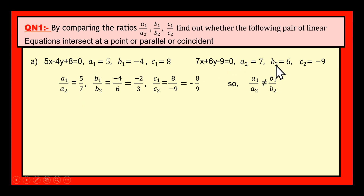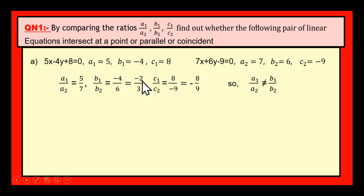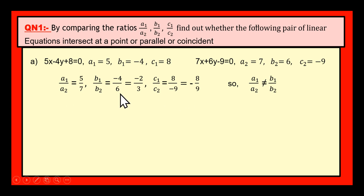Next, B1 by B2 — it is the ratio of the y coefficients. B1 value is minus 4, B2 value is 6. You can cancel 2 in 4 two times and in 6 three times, therefore minus 4 by 6 is equal to minus 2 by 3. And C1 by C2: C1 value is 8, C2 value is minus 9, which gives minus 8 by 9. If you observe these three values, it is clear that A1 by A2 is not equal to B1 by B2.